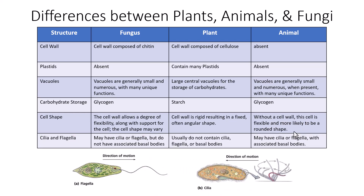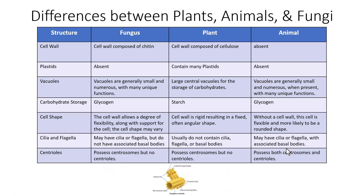Cilia and flagella give cells the ability to move. Fungi may have cilia or flagella but do not have associated basal bodies. Plants usually do not contain cilia or flagella because plant cells are typically less mobile. Animal cells, being the most mobile, may have cilia and flagella, and unlike fungi, those structures are associated with basal bodies, which is how they are anchored and structured.